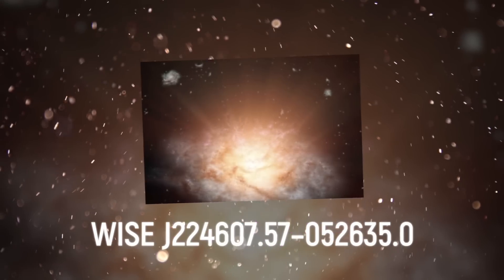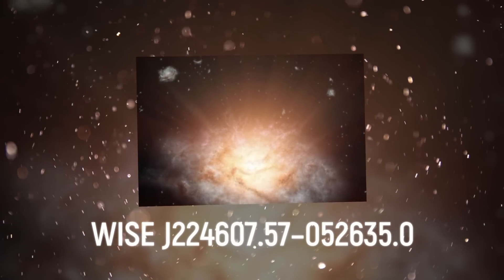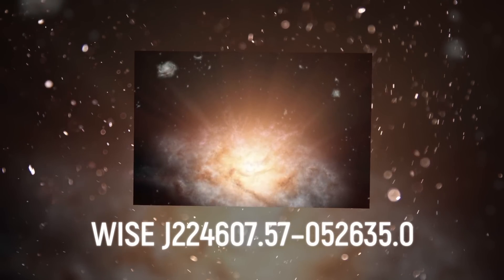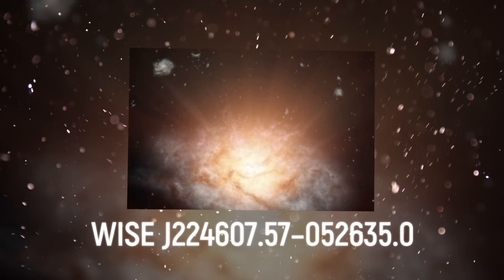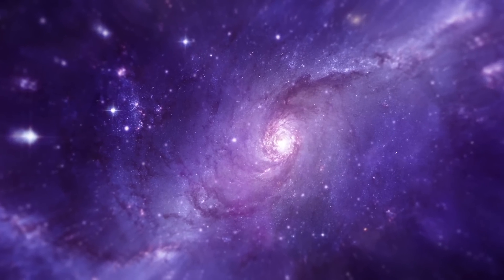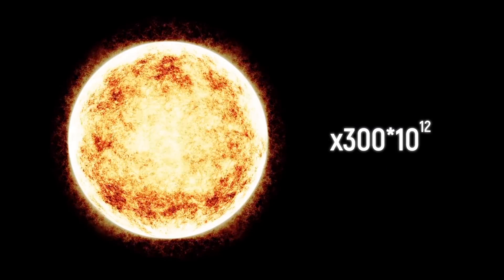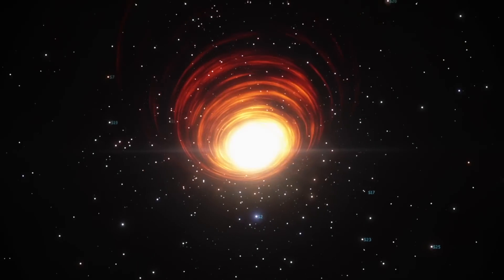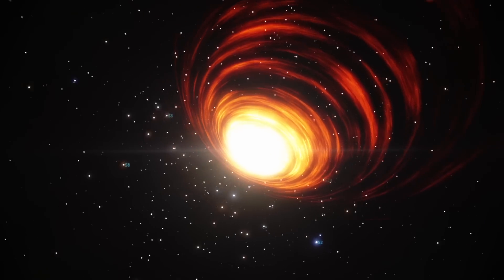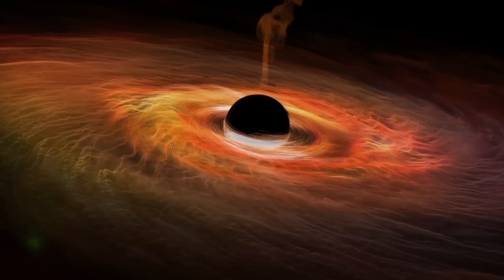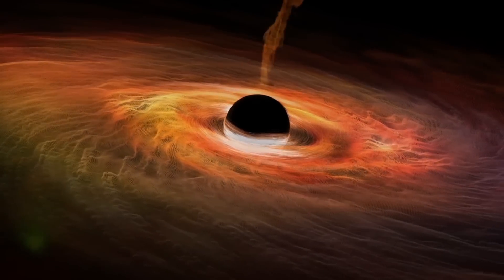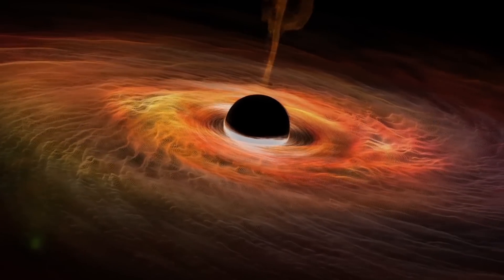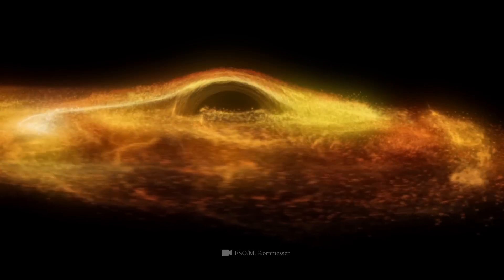In turn, WISE J224607.57-052635.0 from the constellation Aquarius is not any less refined in its form, but it shines brighter than 300 trillion suns. At its center is supposedly a supermassive black hole. Due to its gravity, the black hole attracted gas and matter to itself, forming a hot rotating disk around it.